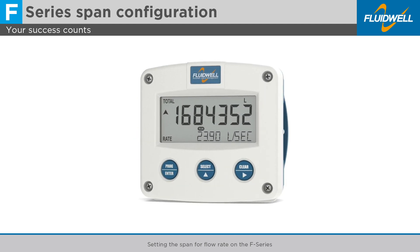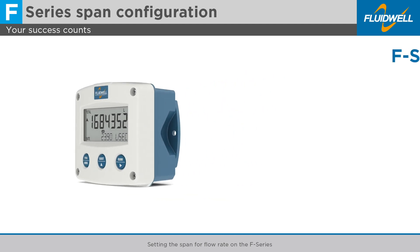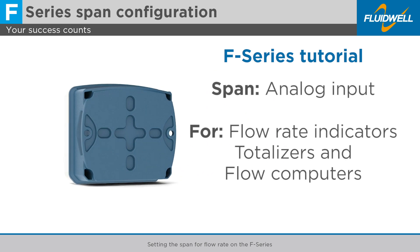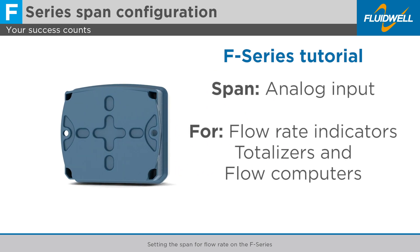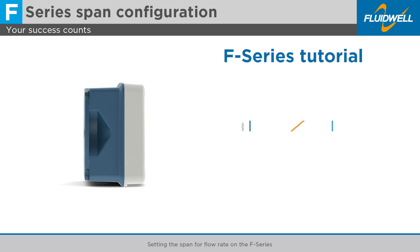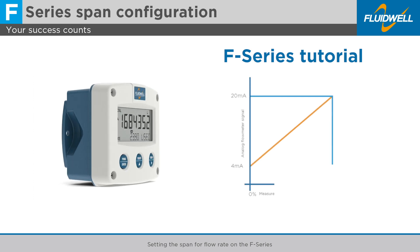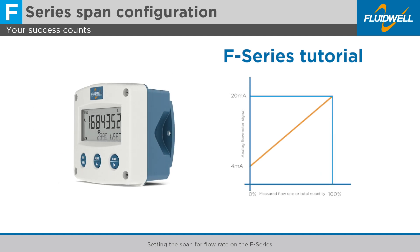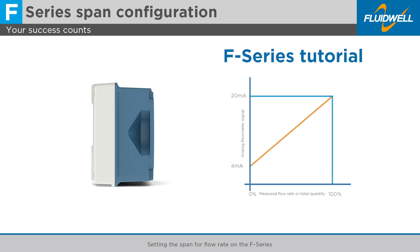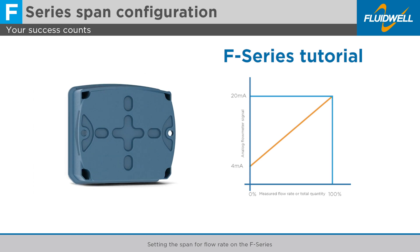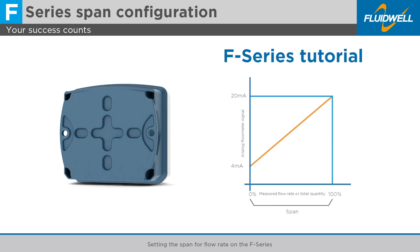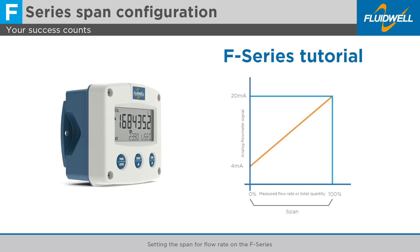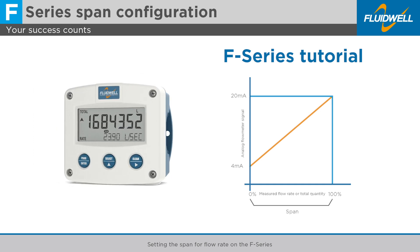In this tutorial we will set the span for an analog input on the F-series flow rate indicators, totalizers and flow computers. The span is used to convert the 4 to 20 milliamp flow meter signal into a measured flow rate or total quantity. The span is the value that corresponds with the 100% sensor input signal at 20 milliamps.